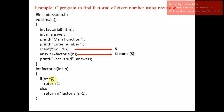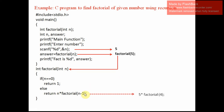Then it will check n equal to 0. n is not equal to 0; n is 5. So it will come to the else part. In the else part, what is happening? It is returning n into factorial of n minus 1. What is n? n is 5. So it is nothing but 5 into factorial of n minus 1. What is factorial of n minus 1? n is 5, so 5 into factorial of 4. Factorial of 5 minus 1 is nothing but 4.